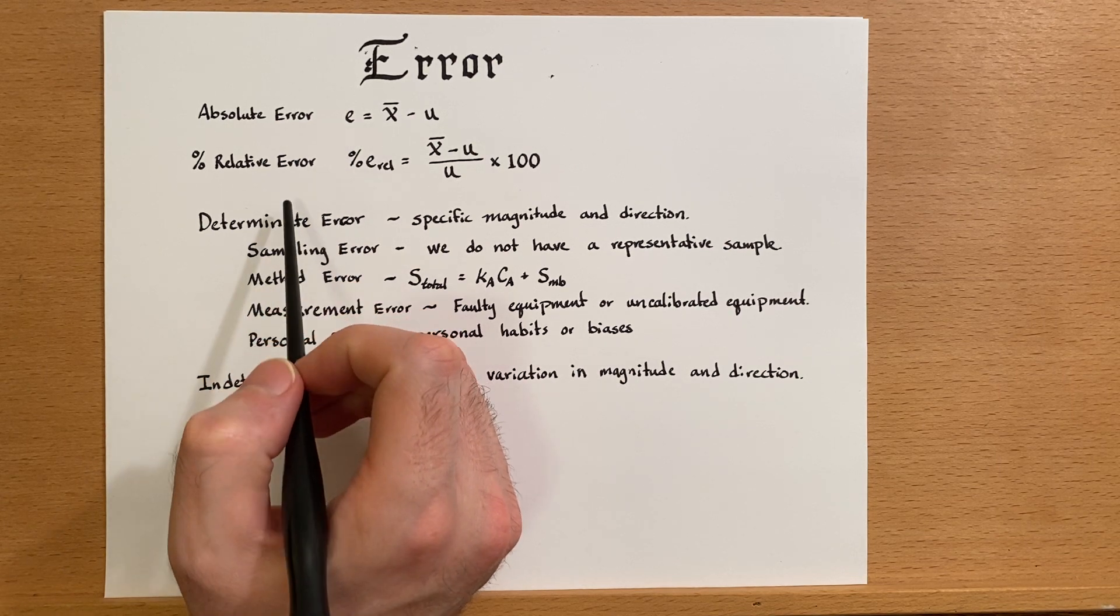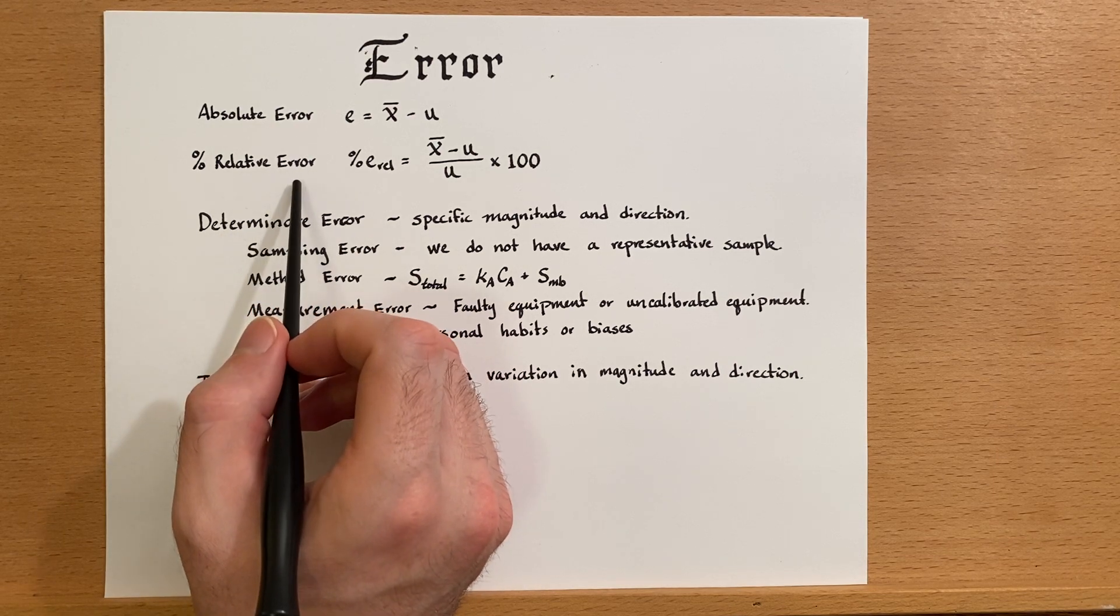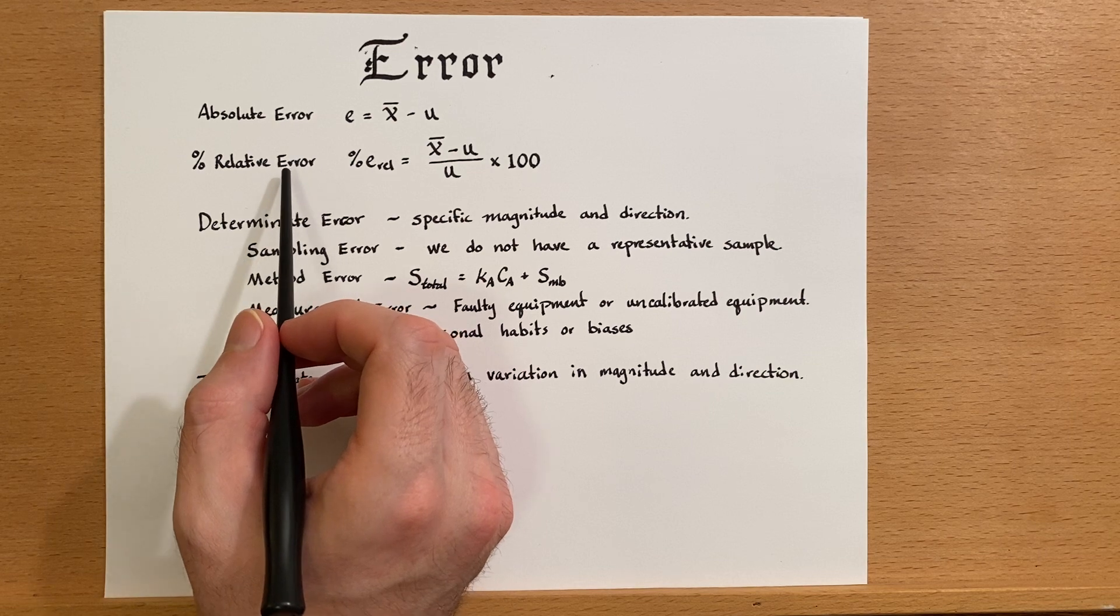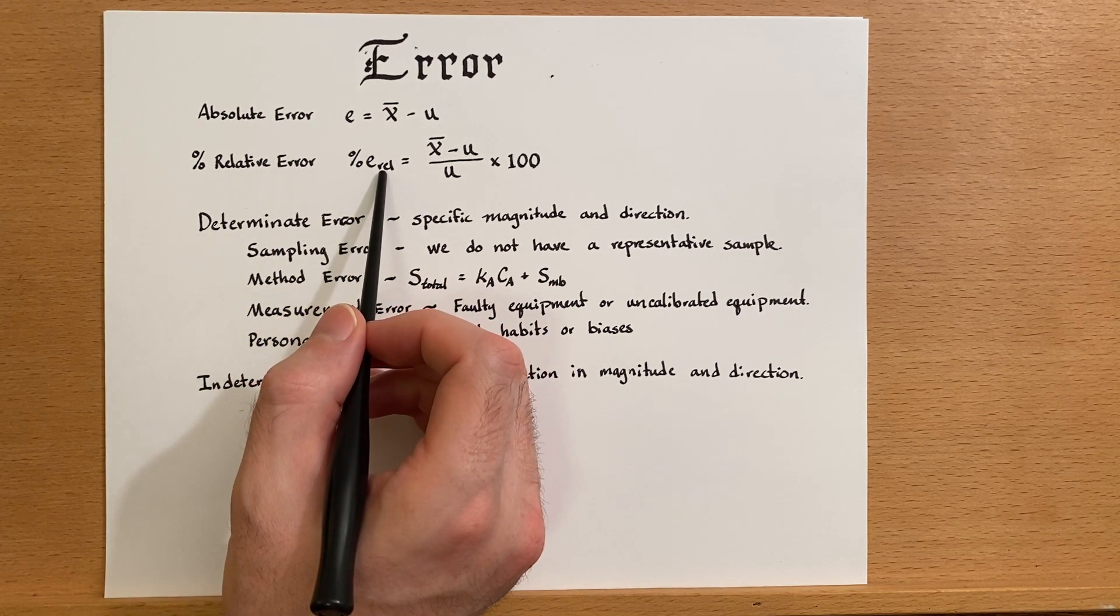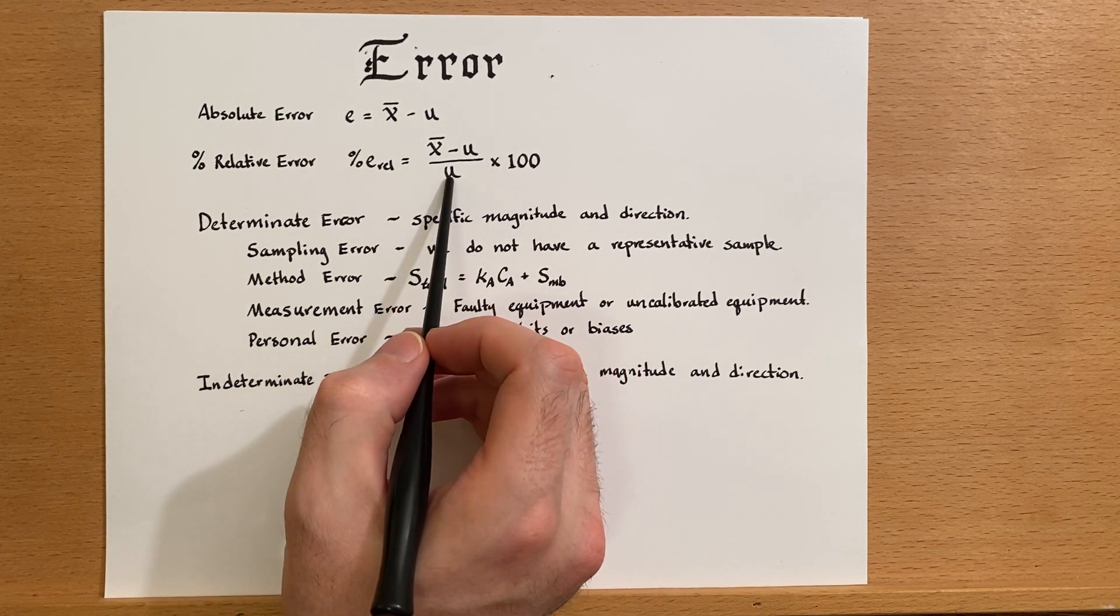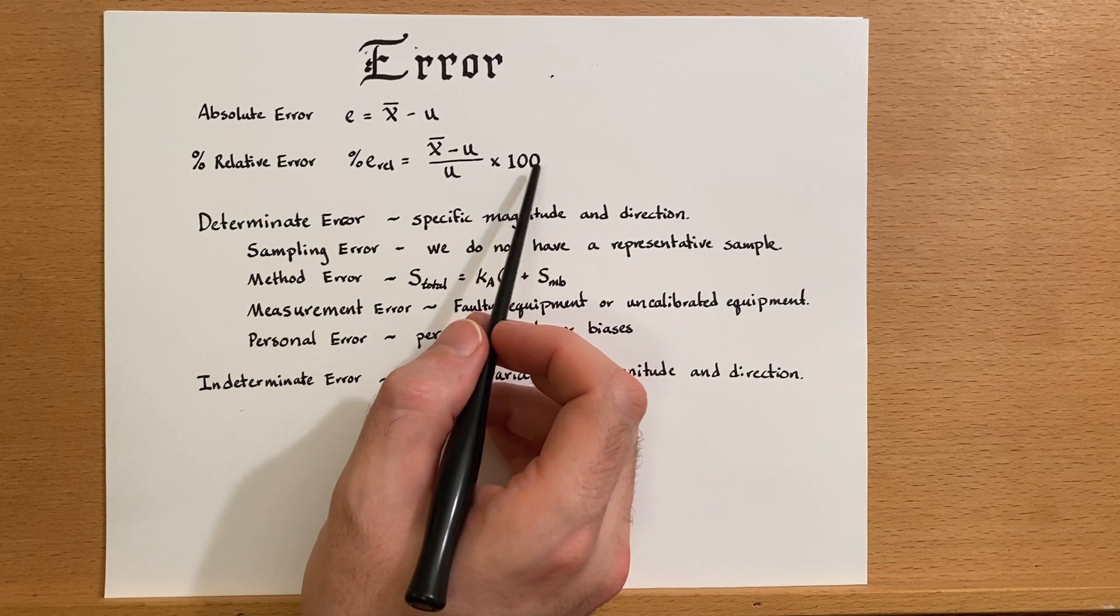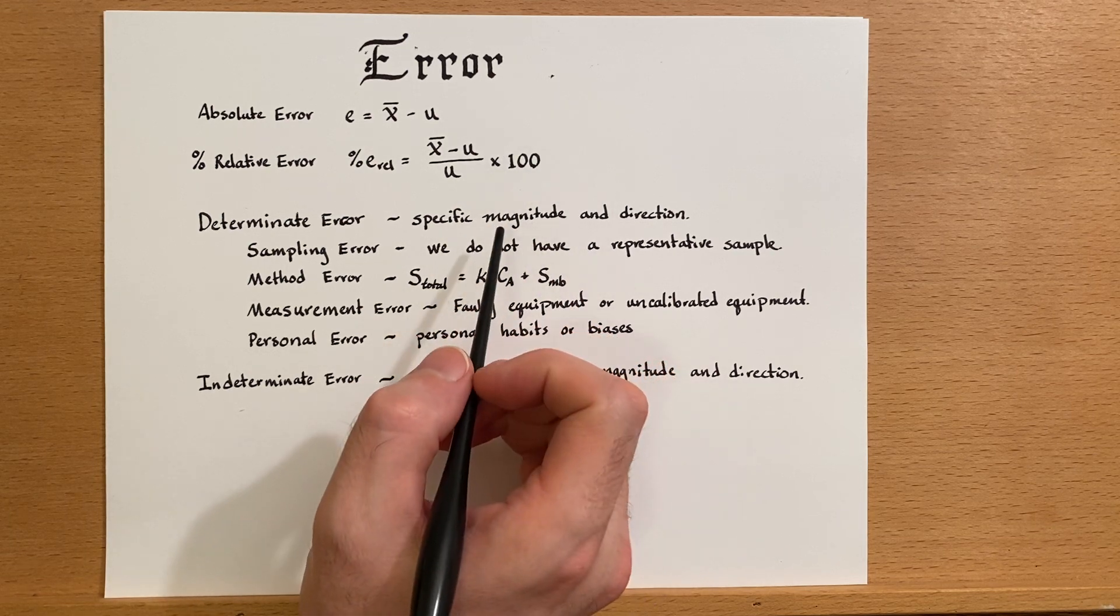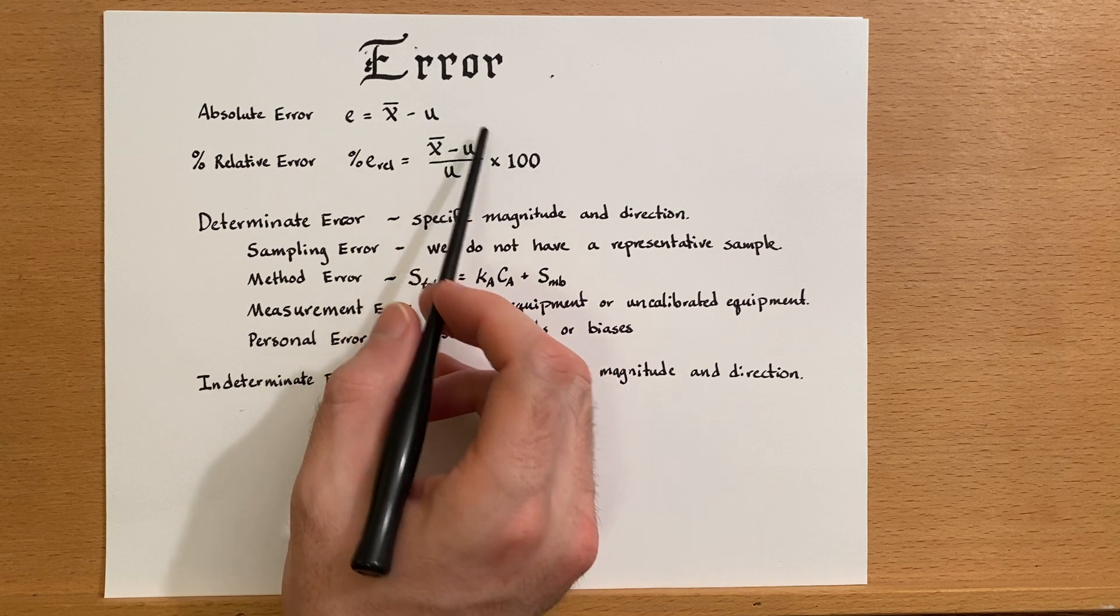This could be a positive or negative number, but this is our absolute error. Something that you may be more familiar with is relative error, or sometimes you'll have heard it calculated as percent error. The percent relative error is simply the average minus the accepted value divided by this accepted value, multiplied by 100%.